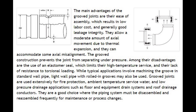Among their disadvantages are the use of an elastomer seal, which limits their high temperature service, and their lack of resistance to torsional loading. While typical applications involve machining the groove in standard wall pipe, light wall pipe with rolled-in grooves may also be used. Grooved joints are used extensively for fire protection, ambient temperature service water, and low pressure drainage applications such as floor and equipment drain systems and roof drainage conductors. They are a good choice where the piping system must be disassembled and reassembled frequently for maintenance or process changes.